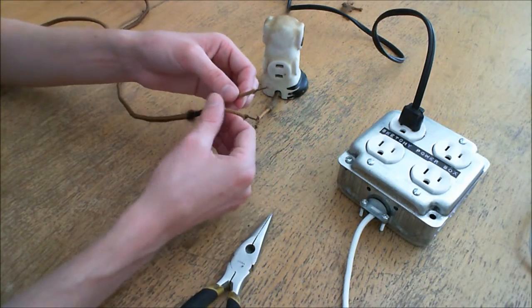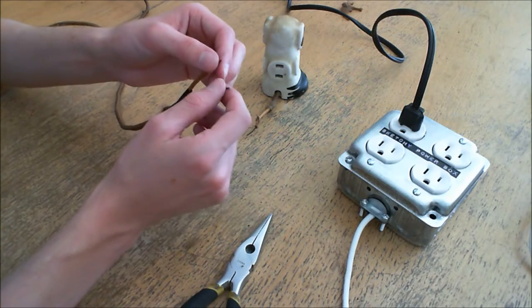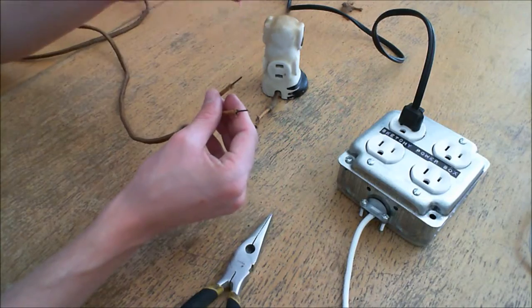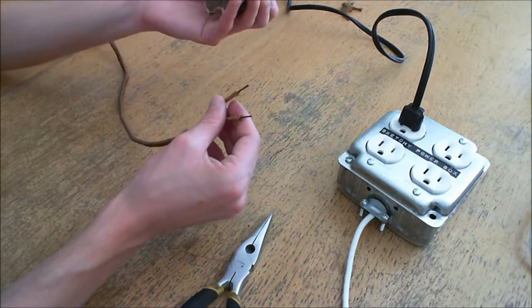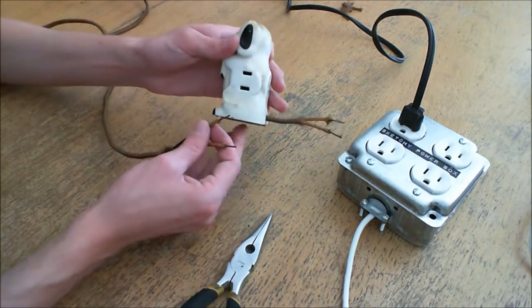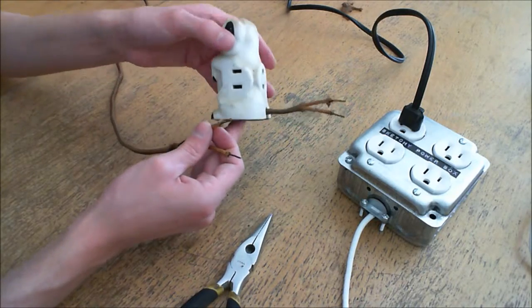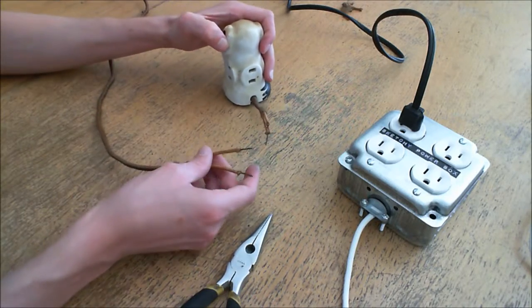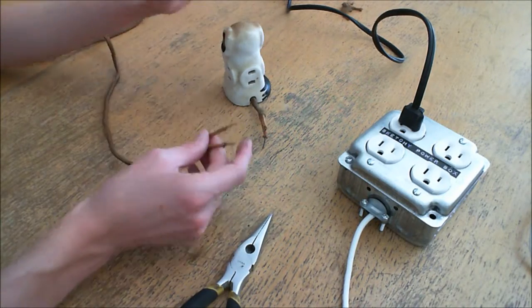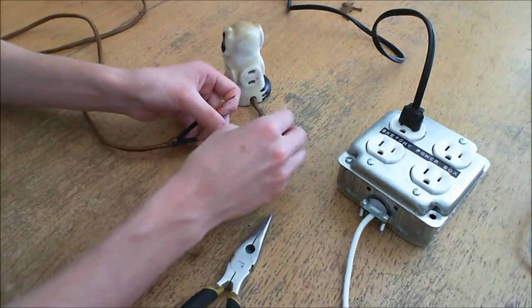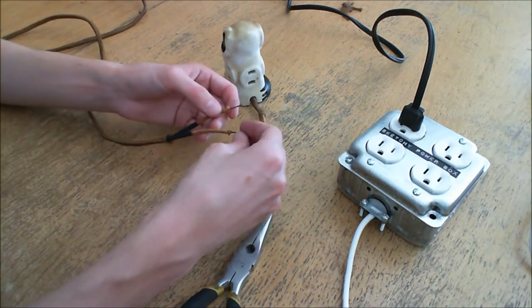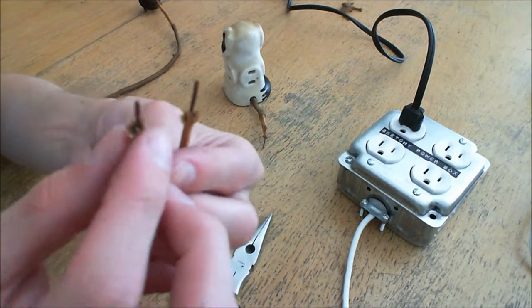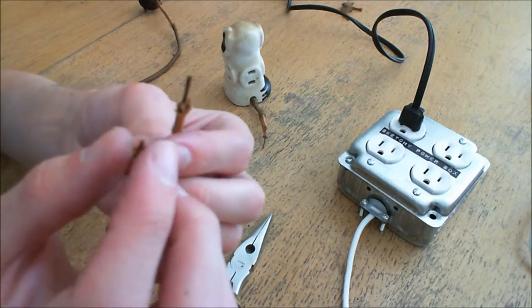Now what that'll do is basically provide an insulating layer between the two joints so that I don't have to use plastic crimps that don't really look very much the part for the age of this. As I said earlier, this was made in the mid-1930s, so it's roughly 80 years old at this point, and I don't think putting some little plastic crimps on it is exactly fitting with the style.